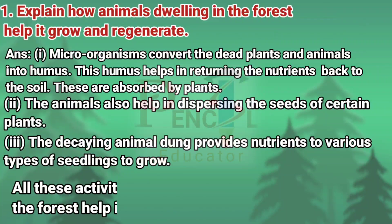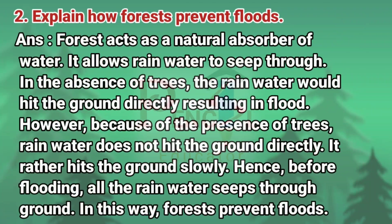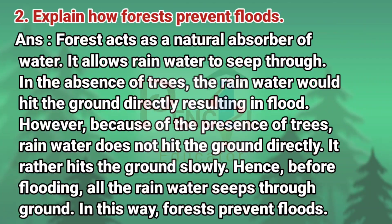All these activities of animals dwelling in the forest help it to grow and regenerate. Second question: Explain how forests prevent floods. Answer: Forest acts as a natural absorber of water. It allows rainwater to seep through. In the absence of trees, the rainwater would hit the ground directly, resulting in flood.